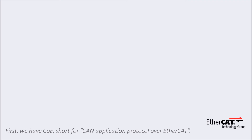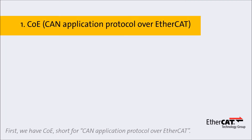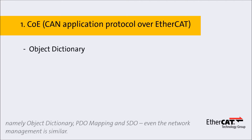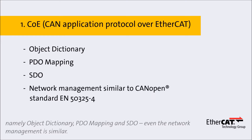First, we have CoE, short for CAN Application Protocol over EtherCAT. With this protocol, EtherCAT provides the same communication mechanisms as in CANopen standard EN 50325-4, namely Object Dictionary, PDO Mapping, and SDO. Even the network management is similar.